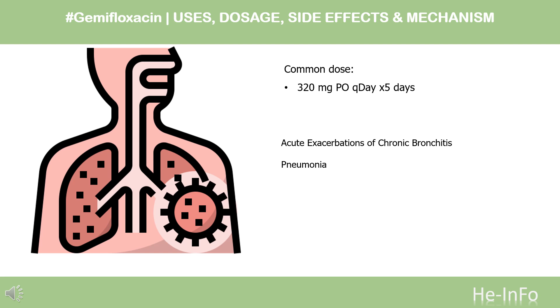Community-acquired pneumonia caused by S. pneumoniae, M. pneumoniae, H. influenzae, or C. pneumoniae: 320 mg PO once daily for 5 days.